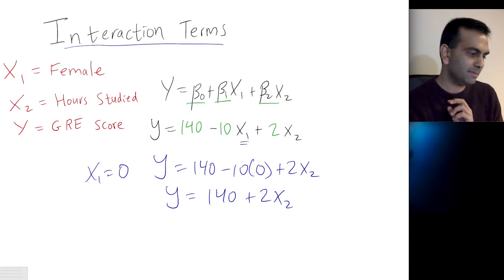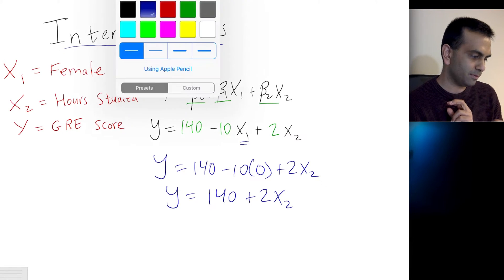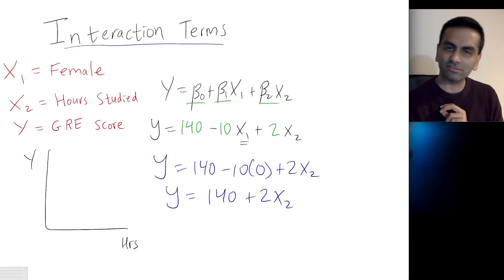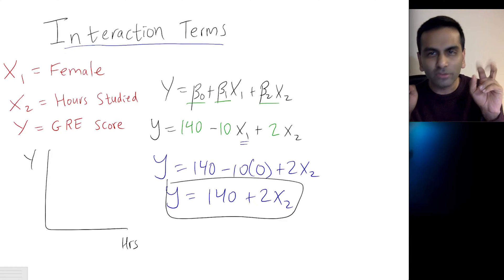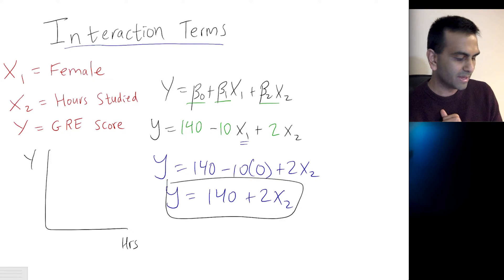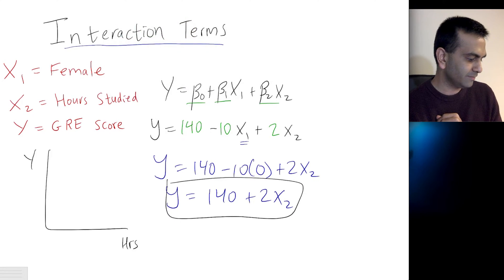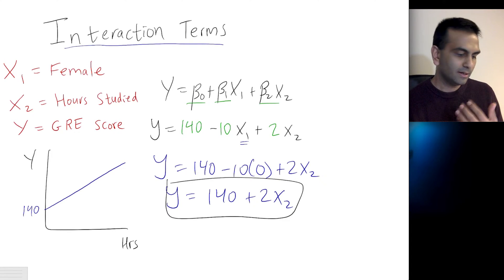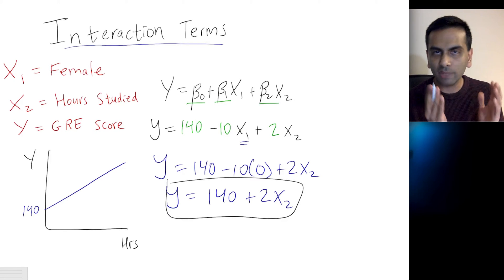So let's think about what that means. If we were to graph this out, where the x-axis is hours studied (x2) and the y-axis is GRE score, this equation has an intercept of 140 and a slope of 2. So the blue line has an intercept of 140 and a slope of 2. We can interpret this as: if you're a male, for every extra hour that you studied, your GRE score goes up by two points. And if you don't study at all, your score is 140.